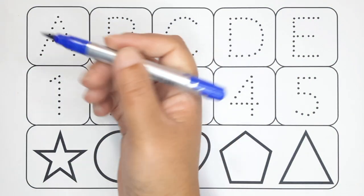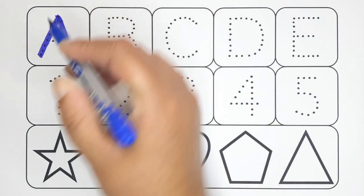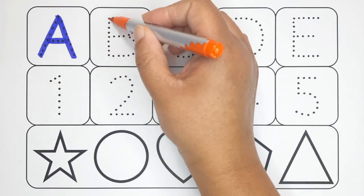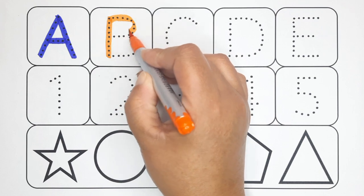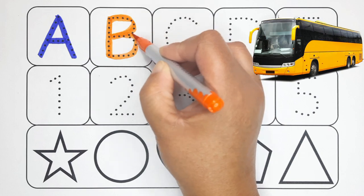Blue color, A. A for aeroplane. Orange color, B. B for bus, B for bus.